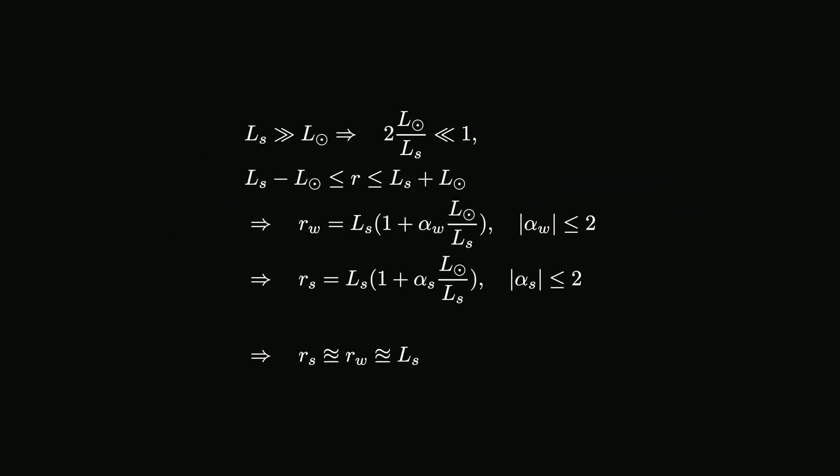Given that Earth-Star distance L_S is much greater than Earth-Sun distance L_Sun, an excellent approximation for both distances can be derived using triangle inequality.